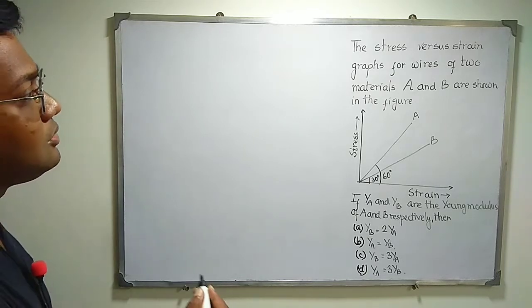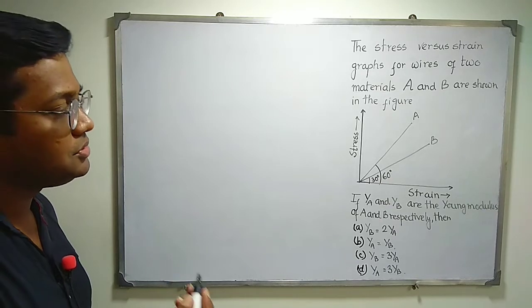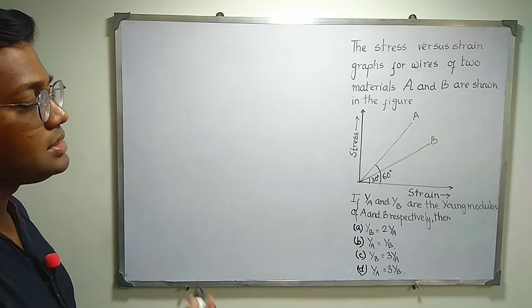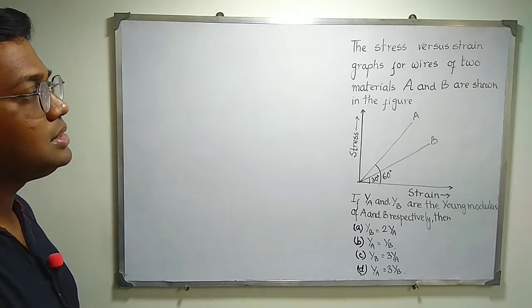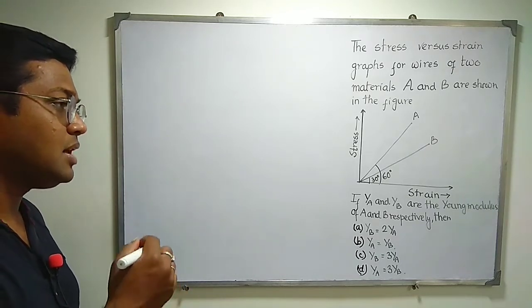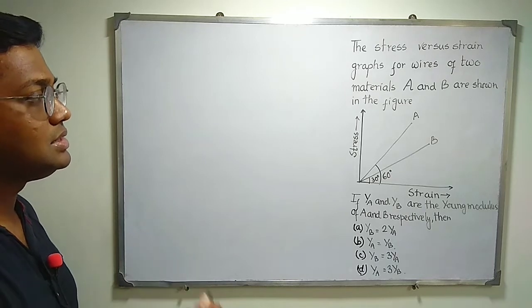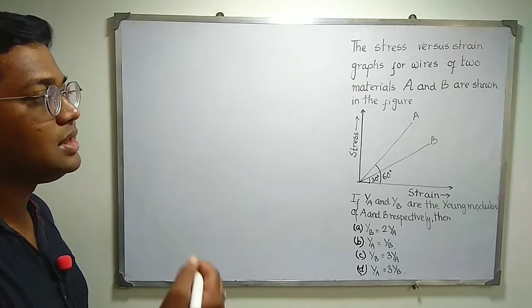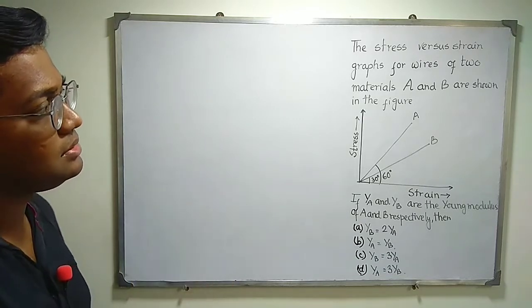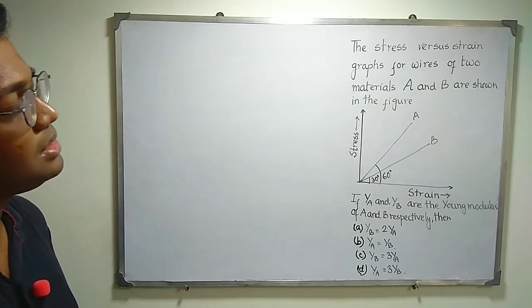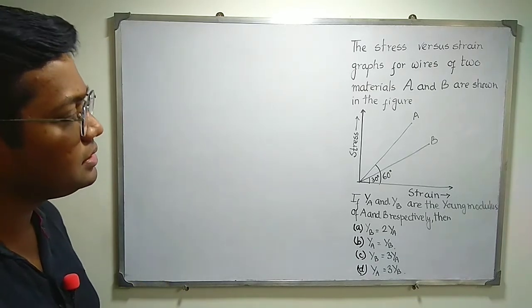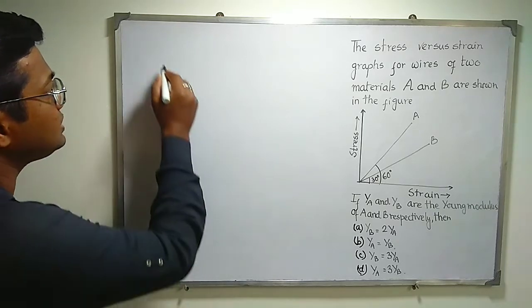So these are the four options given. One thing I need to say is that the coefficient of elasticity in case of longitudinal stress and longitudinal strain is called the Young modulus. It is obviously dependent on the material. If the material is changed with identical arrangement and the same type of deforming force, the stress developed and the strain developed are different depending on the material A and B. The Young modulus is different.